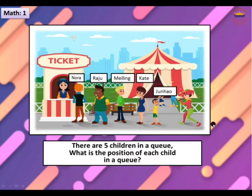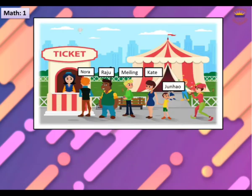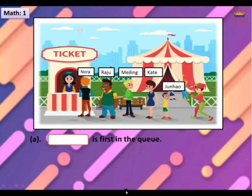There are five children in a queue. What is the position of each child in a queue? Ash is first. Ash is first in the queue.